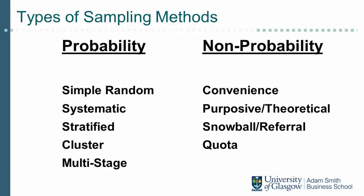In non-probability sampling, some elements in the sampling frame have either zero probability of being selected or the probability is unknown. As a consequence, we cannot accurately determine the margin of error, and it is impossible to know the likelihood that the sample is representative of the population.